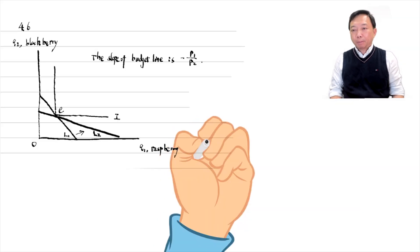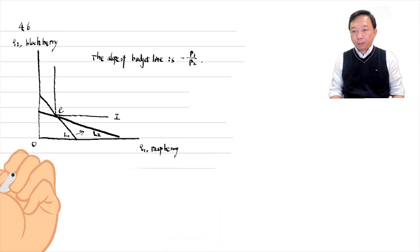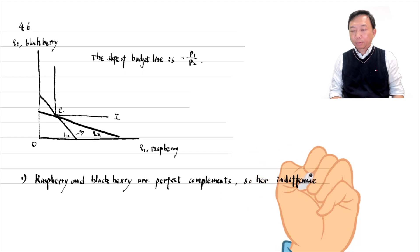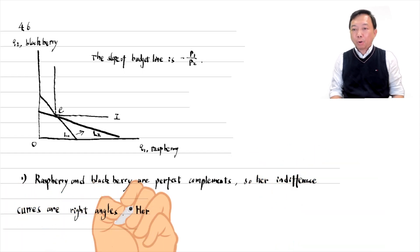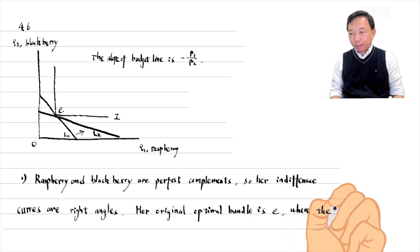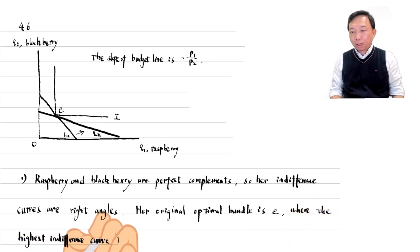In the first step, we draw her budget constraints and indifference curves to help solve the problem. Raspberry and blackberry are perfect complements for Helen, so her indifference curves are right angles. She consumes a fixed proportion of the two goods. Suppose her original budget constraint is L1. Her original optimal bundle is E, where the highest indifference curve touches the budget line L1.